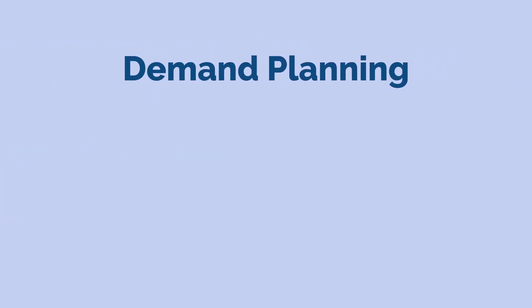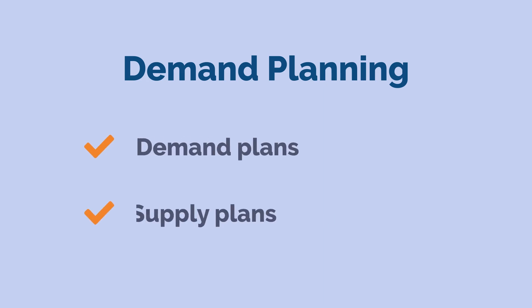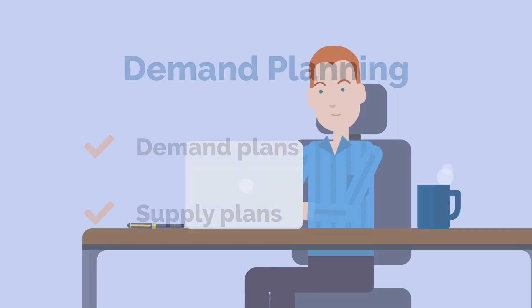The Demand Planning feature opens up even more control over stock replenishment. When you have enabled demand planning, you are able to automatically calculate both demand plans and supply plans, and NetSuite uses these plans to suggest ordering items when your inventory falls below desired levels.